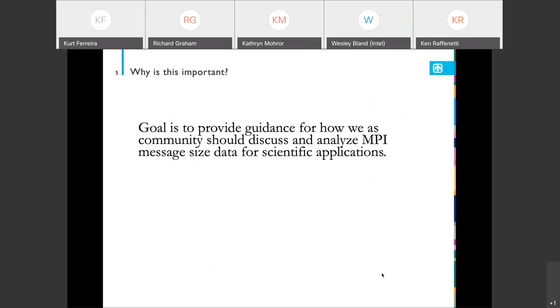The overarching goal here is that we're trying to be a little more principled about how we talk and disseminate and analyze MPI data, specifically for this talk MPI message data. Our goal here is to provide some guidance: How should we be discussing it? How should we be analyzing it? How should we be disseminating that information?